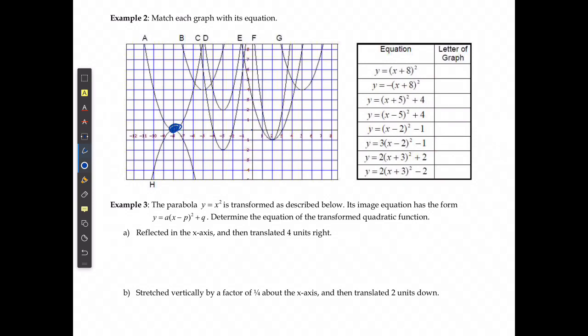The second thing I need to account for is the a value is positive 1, which means that it's going to open upwards. So this one is going to have to be A. It's the only one that actually fits the criteria.